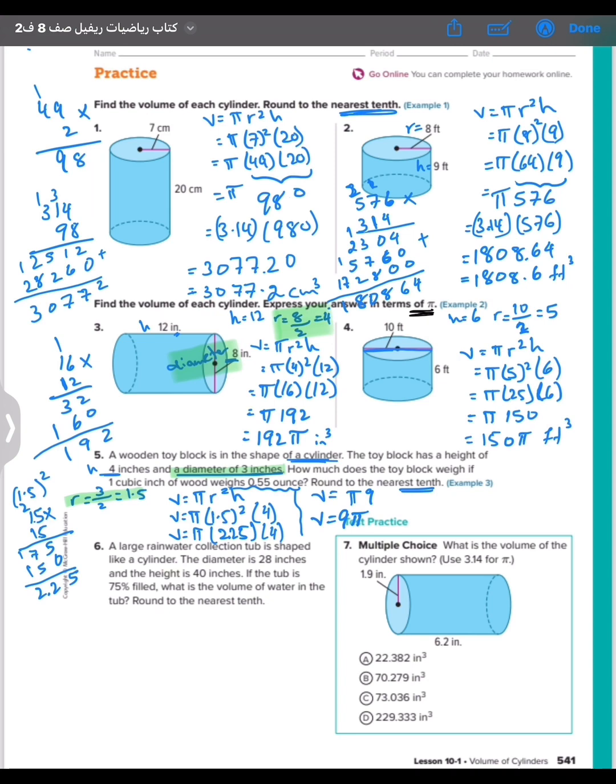9 times pi will be 28.3. Each time equals 3.14, so here 3 times 3.14 times 9 is 28.3. 28.3, we finish the volume.